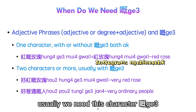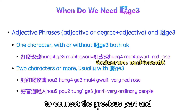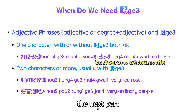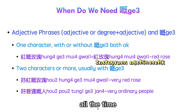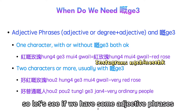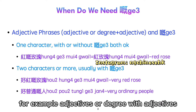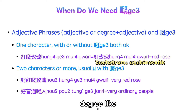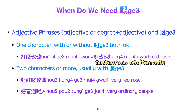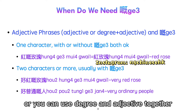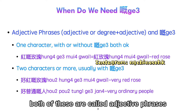When it comes to Attributive, usually we need this character (ge) to connect the previous part and the next part, but we do not need it all the time. If we have some adjective phrases — for example, adjectives or degree with adjectives — degree like 'very much,' 'so,' 'quite,' 'very' to describe the degree of the adjective — you can use an adjective only, or degree and adjective together. Both of these are called adjective phrases.